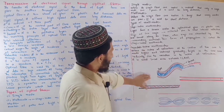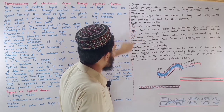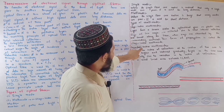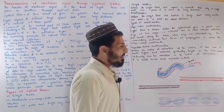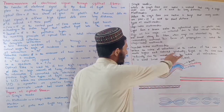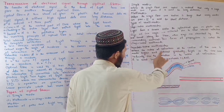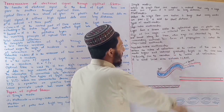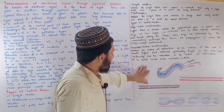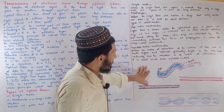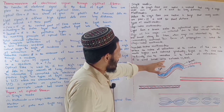The propagation of light signal in step-index multimode depends on total internal reflection at the core-cladding boundary. When the angle of incidence exceeds the critical angle, total internal reflection occurs and the signal is guided through the fiber. It is used in local area networks.